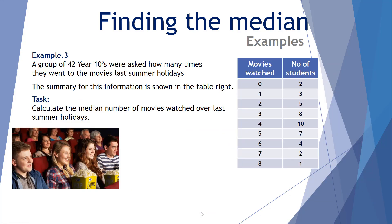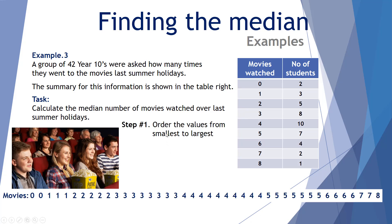Our final example is the movie example. A group of 42 year tens were asked how many times they went to the movies last summer holidays, and the summary is shown in a table. We want to calculate the median number of movies watched. Step one: order the values from smallest to largest. Two students went zero times, three went one time, five went two times, and so forth.